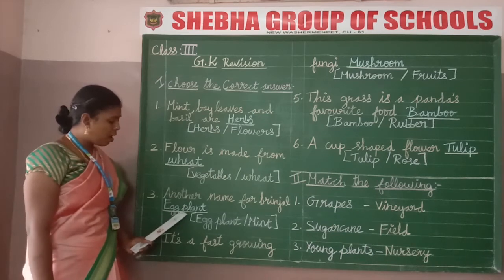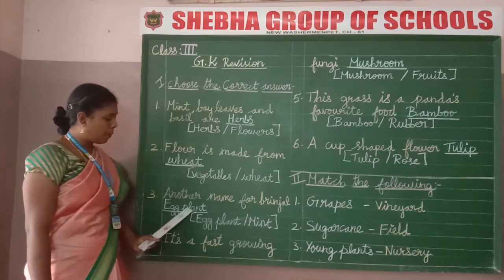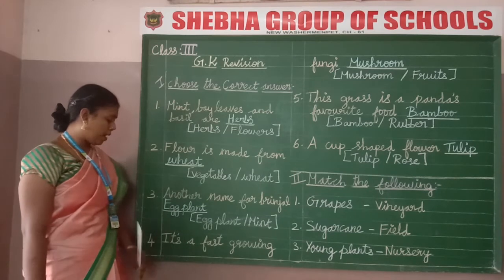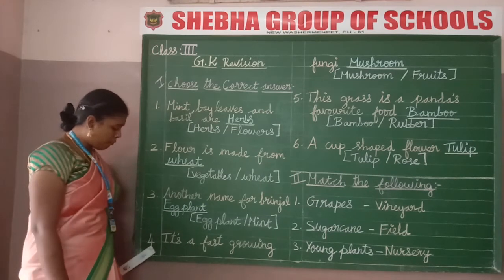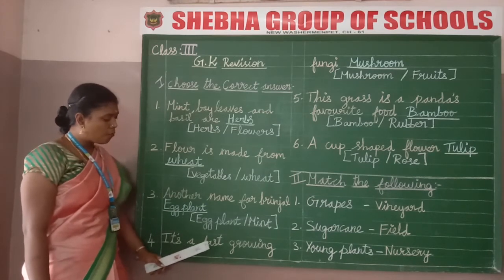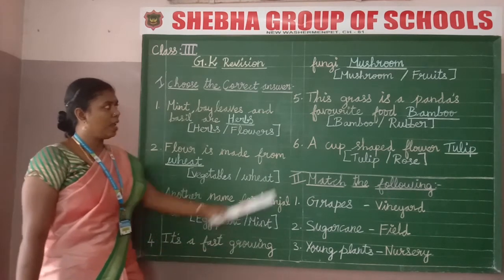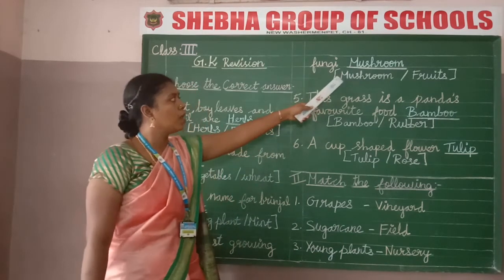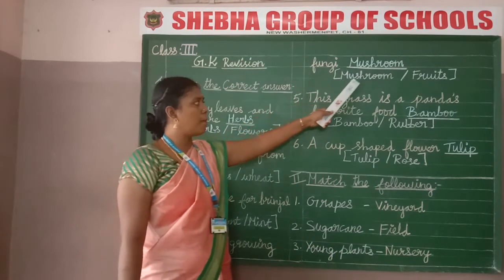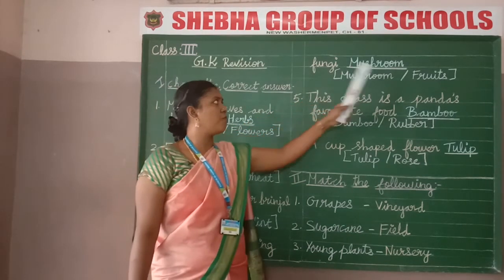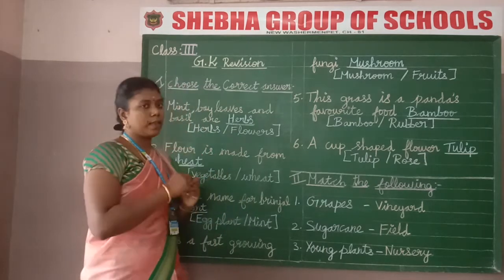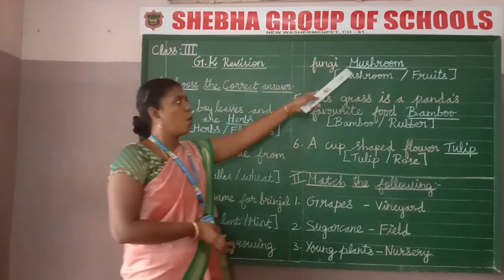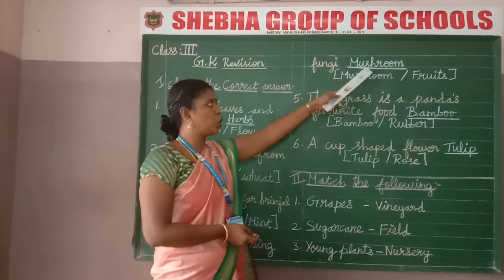Spelling of eggplant: E-G-G-P-L-A-N-T. Number 4: it's a fast-growing fungi — the answer is mushroom. The options given are mushroom and fruits. Fungi means punjai. What is the spelling of mushroom?